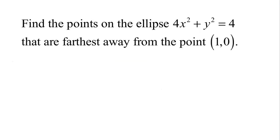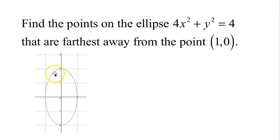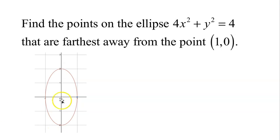Our next question is to find the points on the ellipse 4x squared plus y squared equals 4 that are the farthest away from the point (1, 0). We have an ellipse and the point (1, 0). Notice this one is two units away; another point at about (0, 1/2) would be root 5 away — approximately 2.236. Is there some point on the ellipse farther than root 5? We're looking for the points as far as we can go from (1, 0) while still on the ellipse.